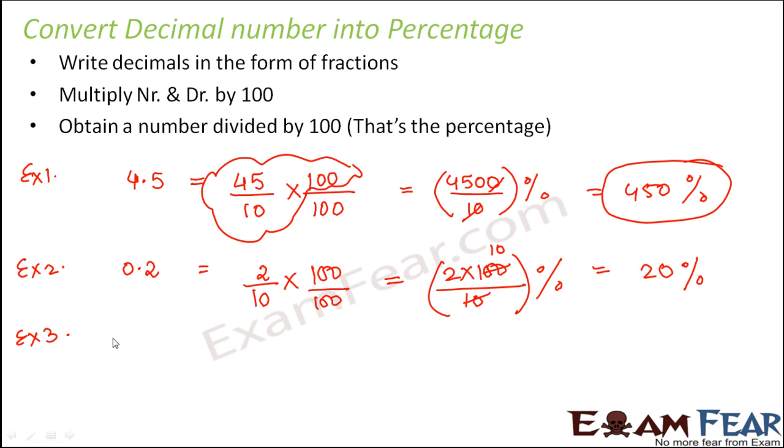Let us look at example 3: 0.05. So this is equal to 5 divided by—after decimal point you have two digits, so here you will have two zeros in the denominator. So here also you multiply the numerator and denominator by 100. So you get 5 times 100 divided by 100 times 100 percent. So this 100 and 100 will cancel out, so this is 5%.